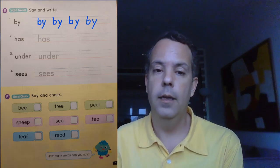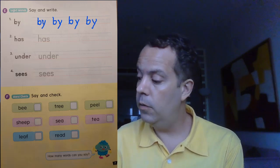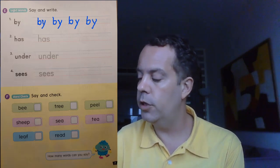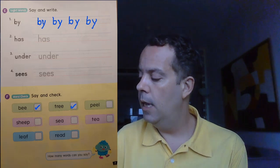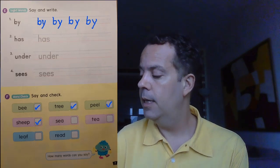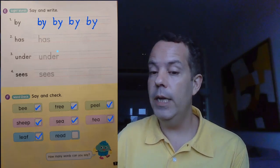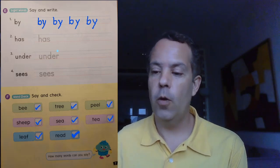And then the word check — try to read the words aloud to practice: bee, tree, peel, sheep, sea, tea, leaf, and read. That's it for today. We're going to see each other again next week with another phonics video. Don't forget to do your homework — ask your parents to take a picture and send it to me so I can check. Bye-bye, see you again next week!